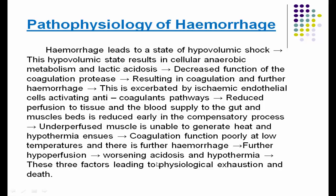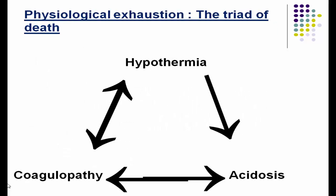That worsening hypoperfusion causes worsening acidosis and again hypothermia. These three factors lead to physiological exhaustion and death. Now let's see the triad of death — hypothermia, coagulopathy, and acidosis — which are all interrelated with each other.